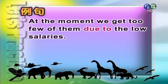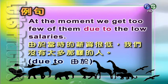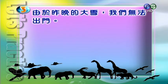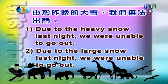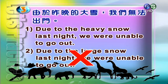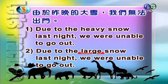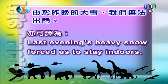At the moment we get too few of them due to the low salaries.（由于当时的薪资很低，我们没有太多那样的人。）我们要学 due to（由于）。由于昨晚的大雪，我们无法出门：Due to the heavy snow last night, we were unable to go out（正确）；Due to the large snow last night, we were unable to go out（错误，修饰雪大应用 heavy 而非 large）。另外说法：Last evening's heavy snow forced us to stay indoors。